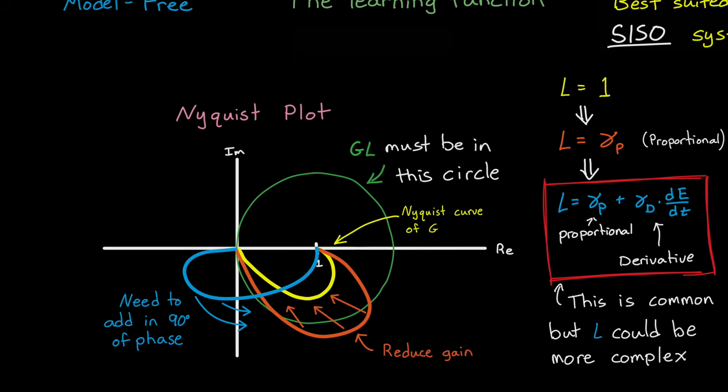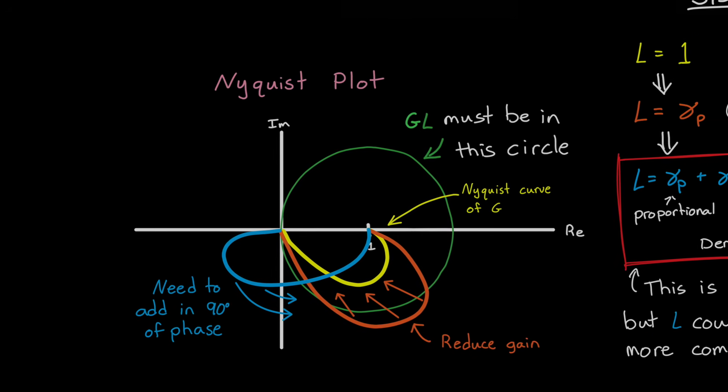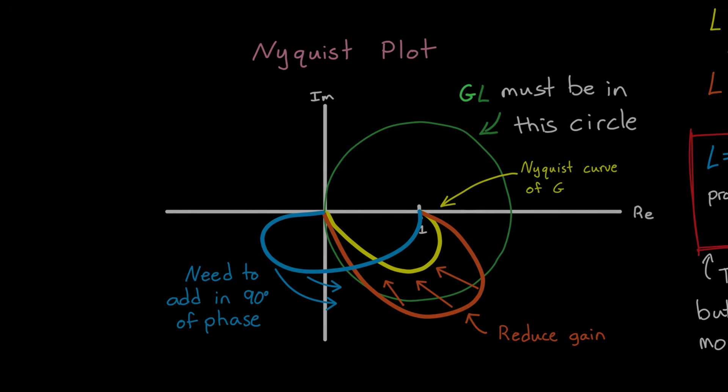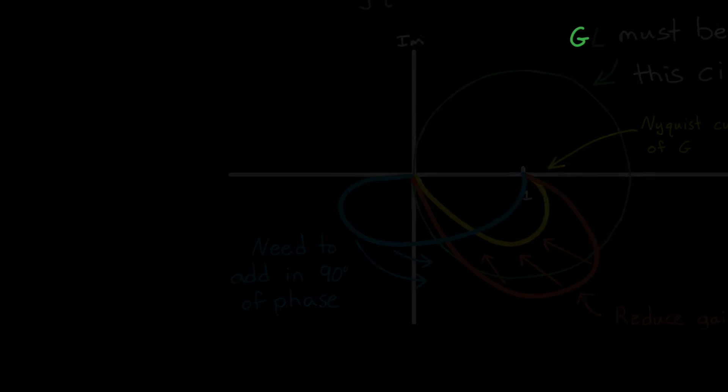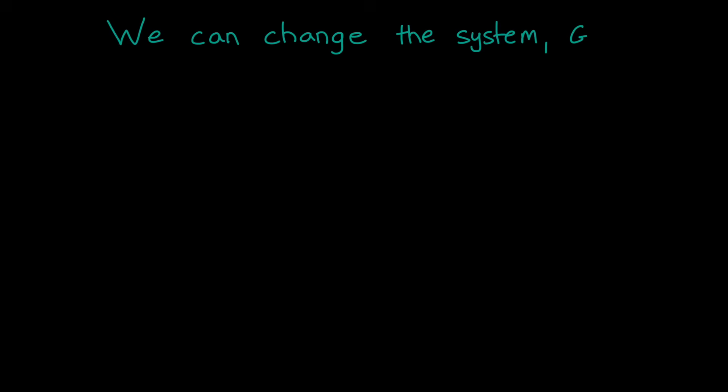And you might be thinking, well that seems pretty hard to guarantee. But there is something we have control over that we haven't discussed yet. And do you know what that is? That's right, it's the system itself. We can change g in a way that helps ILC converge.